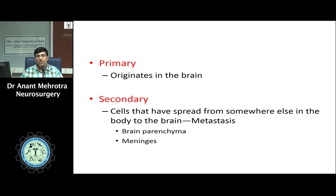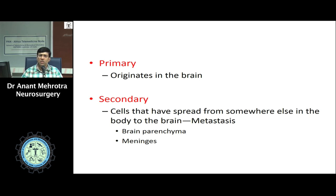Apart from neurons, glial cells, and meninges, the vessels that bring blood to or take blood away from the brain are also an important component and can lead to development of tumors. Tumors which arise from the vessels are usually referred to as angiotheliomas, or certain rare sarcomatous components might arise from these vessels.